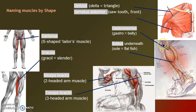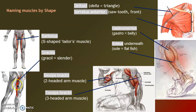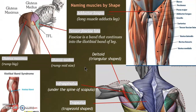Serratus is jagged. The gastrocnemius is the big calf muscle — it has a lateral and medial belly. Underneath is a sole-shaped muscle, the soleus. The sartorius is S-shaped and helps us cross our legs — that's why it's called the tailor's muscle. The gracilis is a slender muscle along the midline. Bi means two heads, tri means three.